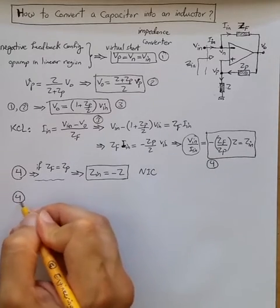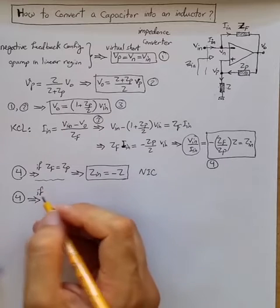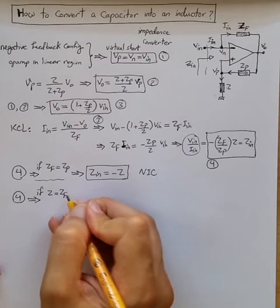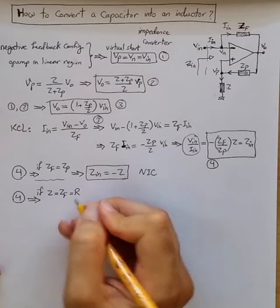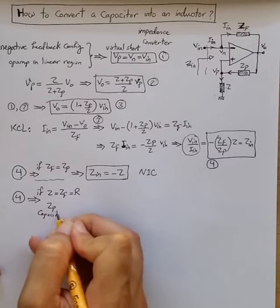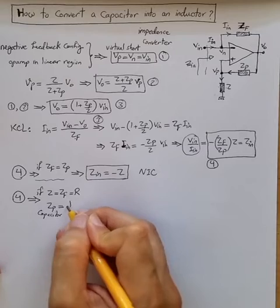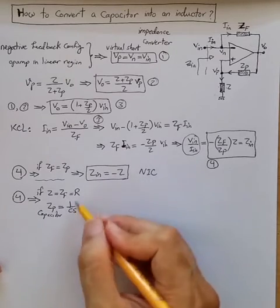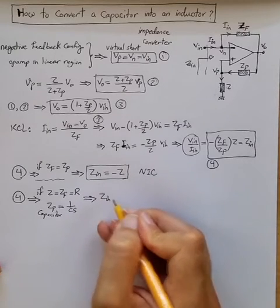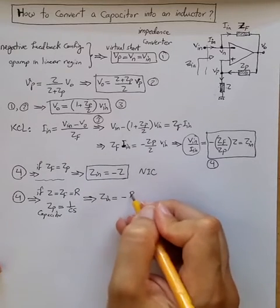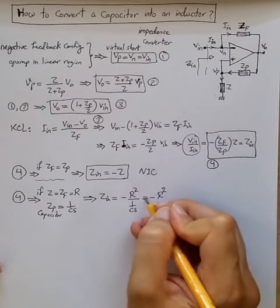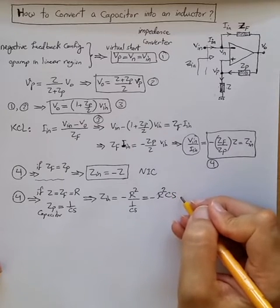And from 4, if let's say Z equal to ZF equal to R, and ZP is a capacitor, then its impedance is one over CS. So replacing the values for Z, ZF, and ZP in 4, we can get ZN equal to minus R squared over one over CS, which means minus R squared CS.